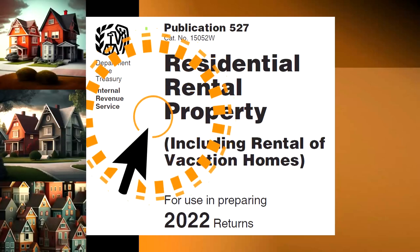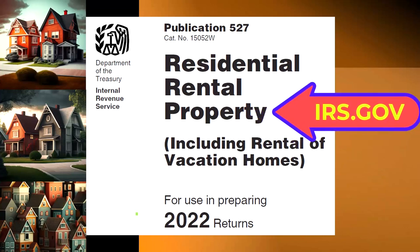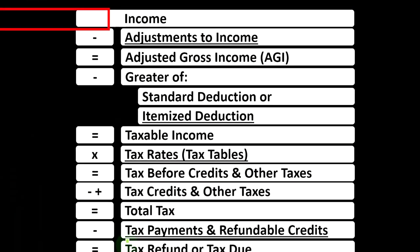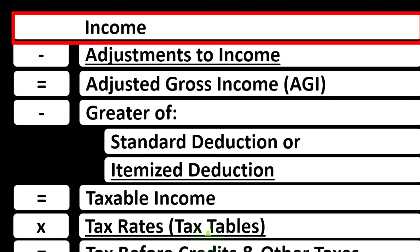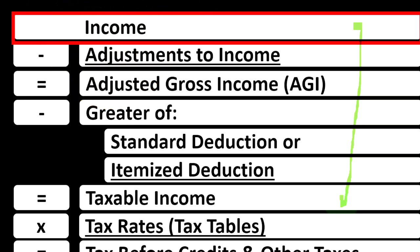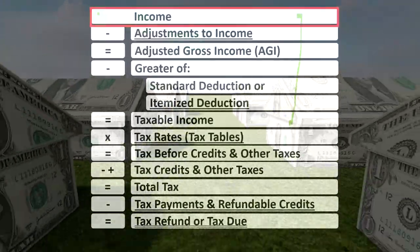Most of this information comes from IRS Publication 527, Residential Rental Property Including Rental of Vacation Homes, tax year 2022, available at irs.gov. Looking at the income tax formula, we're focused on line one income. The first half of the income tax formula is essentially an income statement outline, with Schedule E — rental income minus rental expenses — flowing into line one.